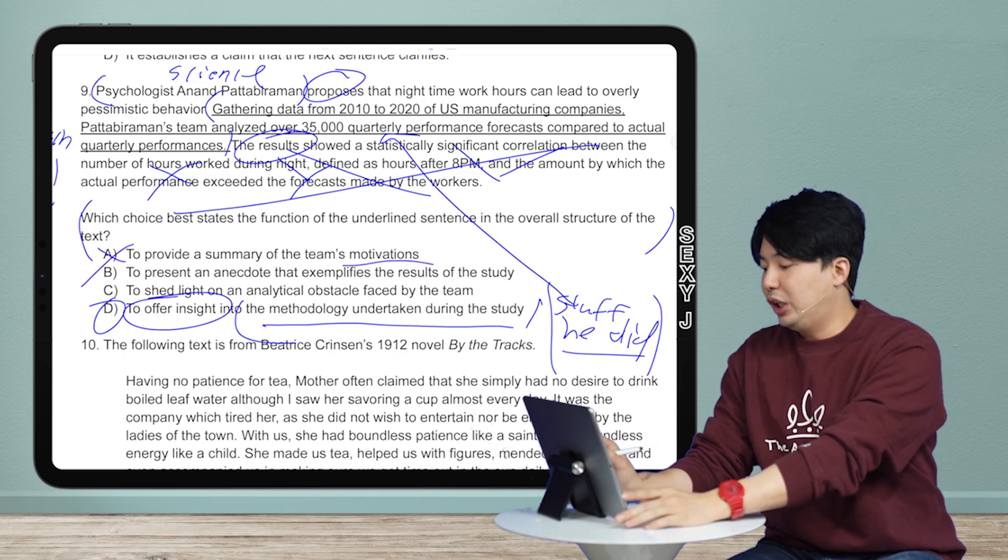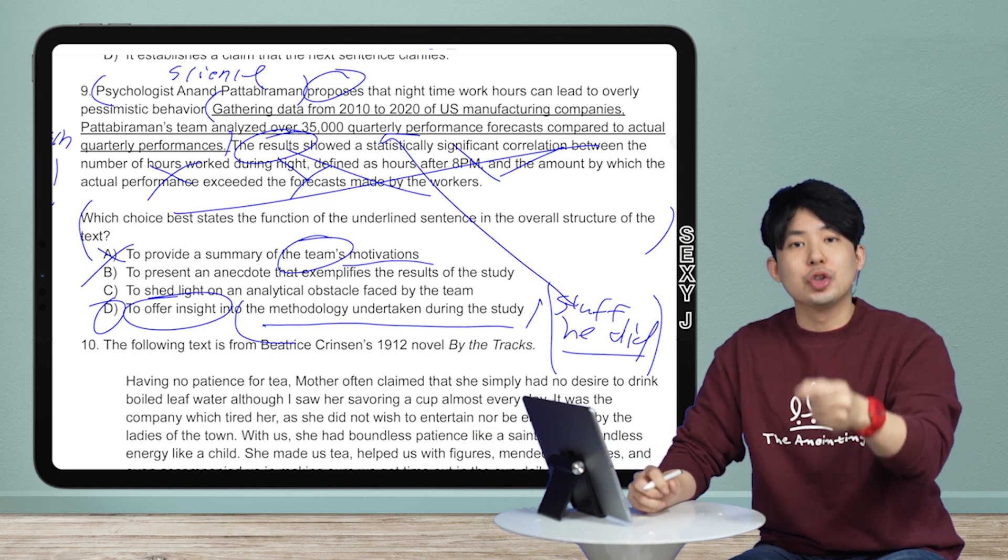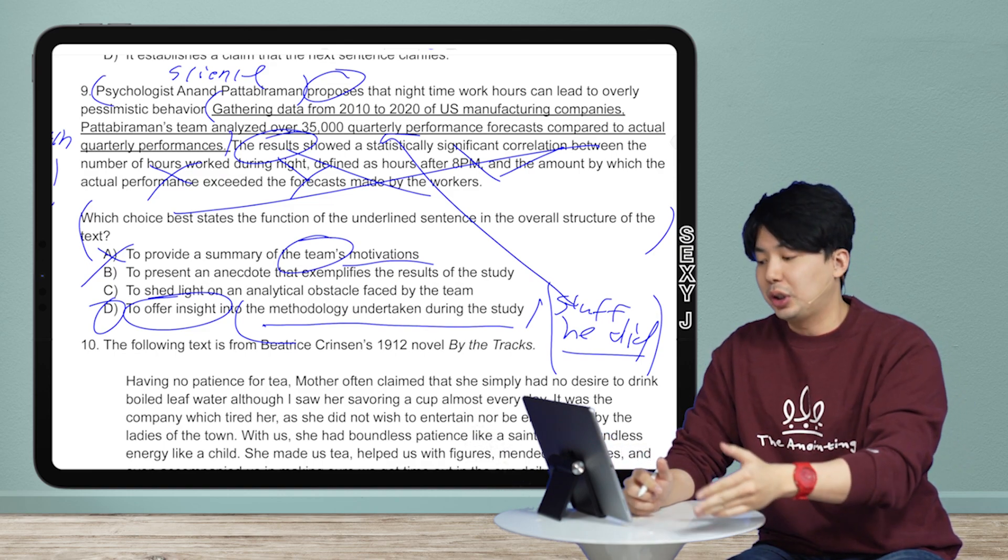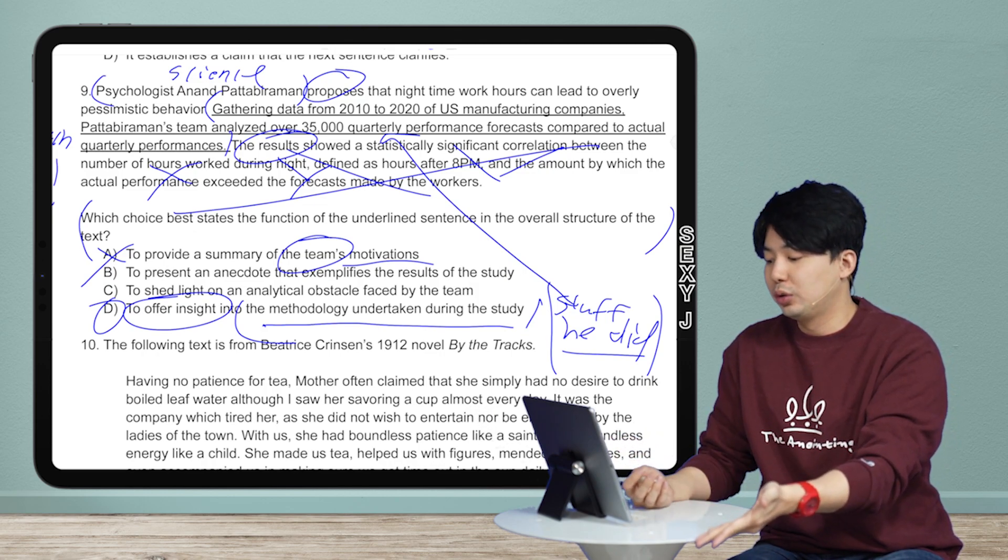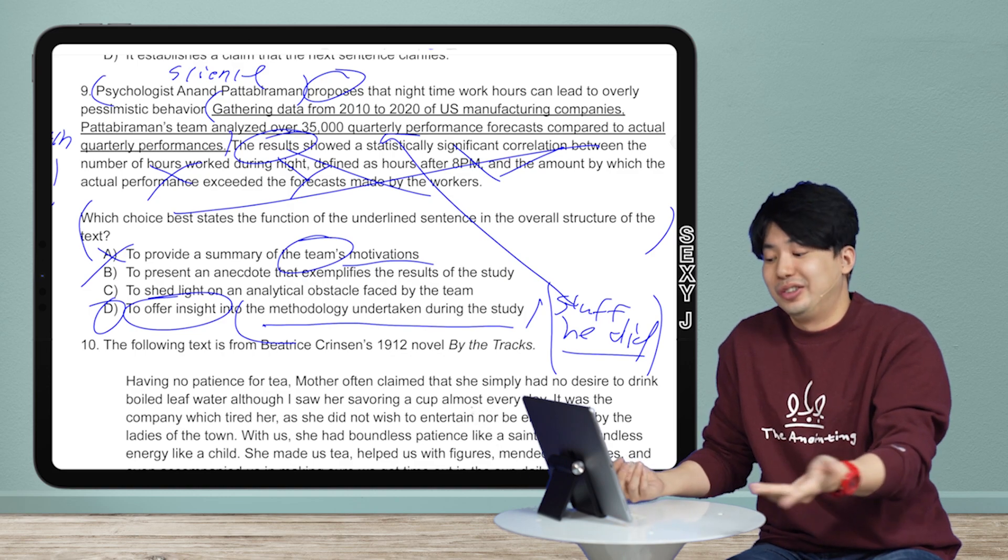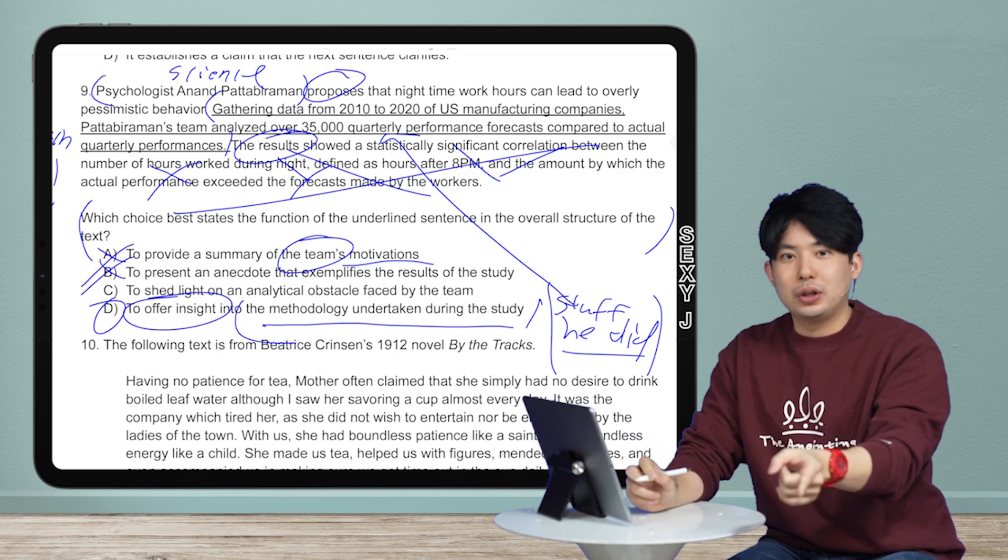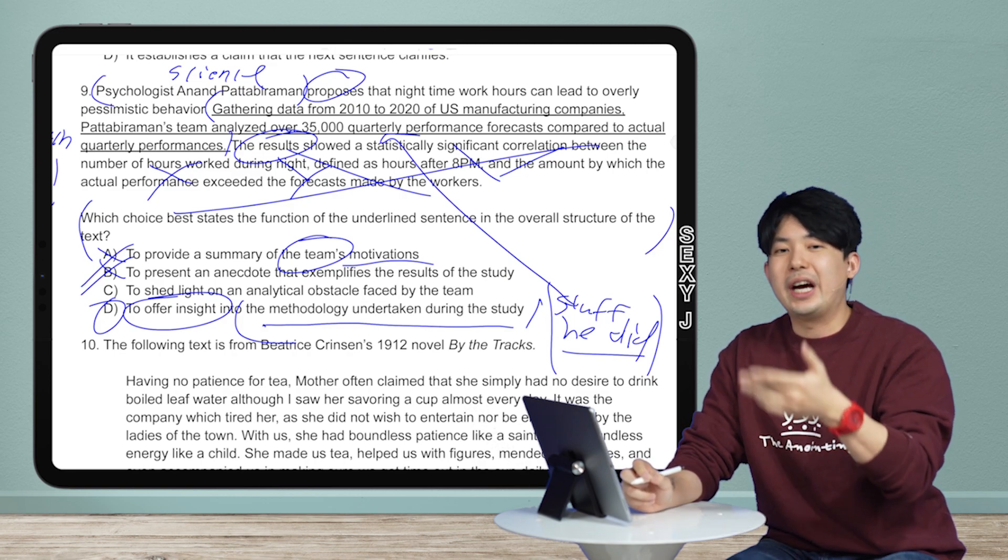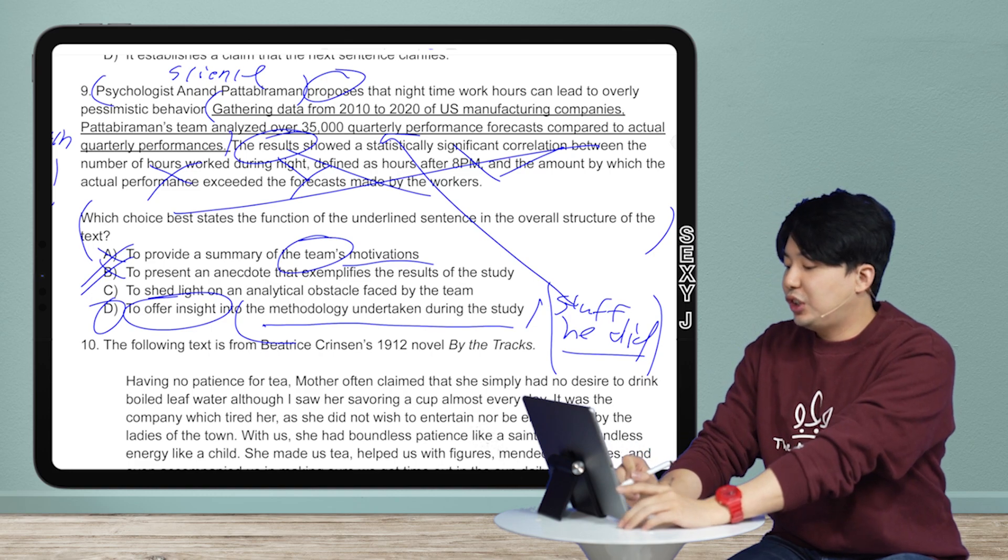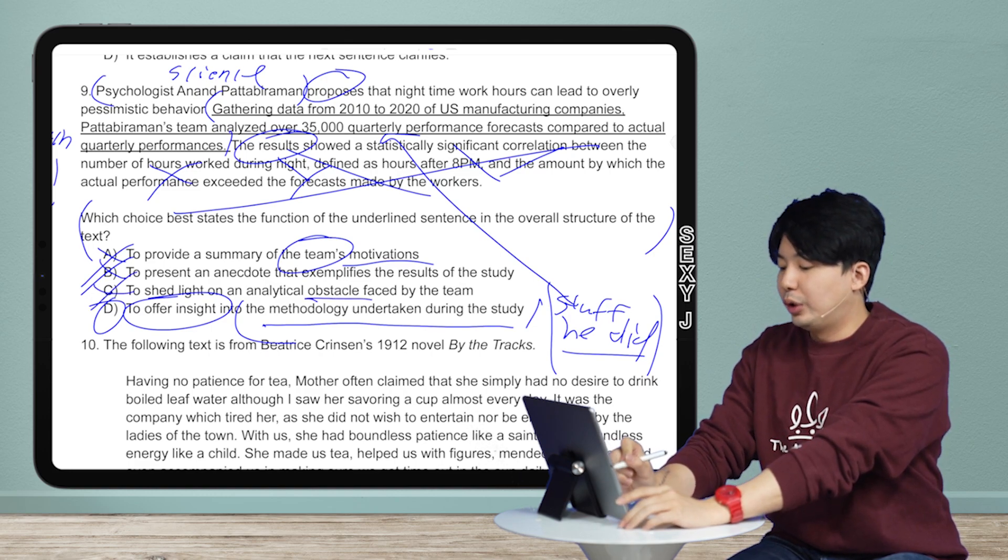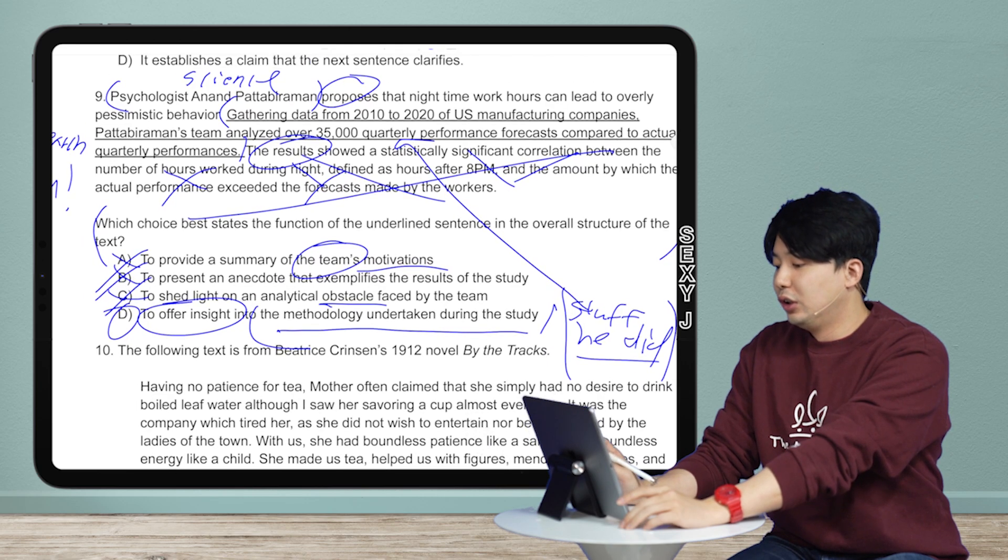So is it about stuff he did? It is. It is not A, motivations. I don't know why they did the team's motivation. They always give you multiple ways where you can get rid of it. So you may say, oh, but I kind of feel like I know why Anand Patabiraman did the research. What about this team? Did you interview every member of the team? How do you know? You don't. And then B, it's not an anecdote. You guys know what an anecdote is? And you can Google it, but I can tell. An anecdote is like a personal story. This happened to my uncle Fred. And then C, obstacle. There was nothing in here that had any synonym with difficulty. So the answer here is D.